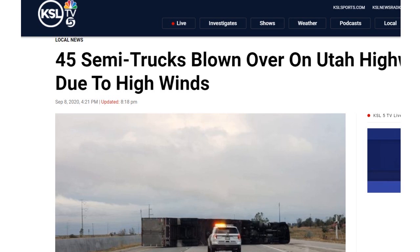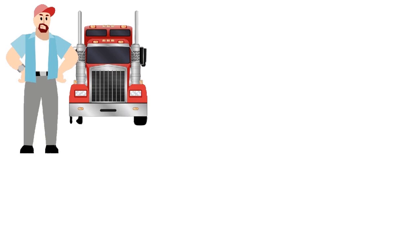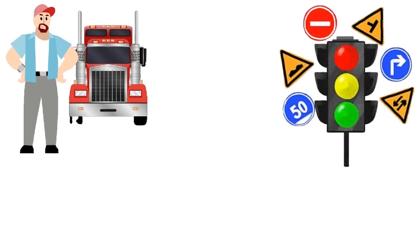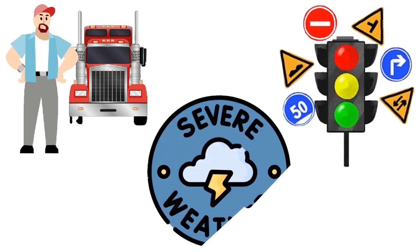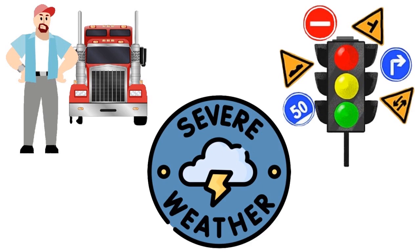Trucks have a wide sail area similar to a sailboat, making them vulnerable to wind interference. A 53-foot by 9-foot truck can have a sail area of 500 square feet — the same winds that only shake a passenger car can flip an entire truck. Truck driving safety training courses cover high winds and road safety, but deadheading drivers need to be especially cautious with severe weather.